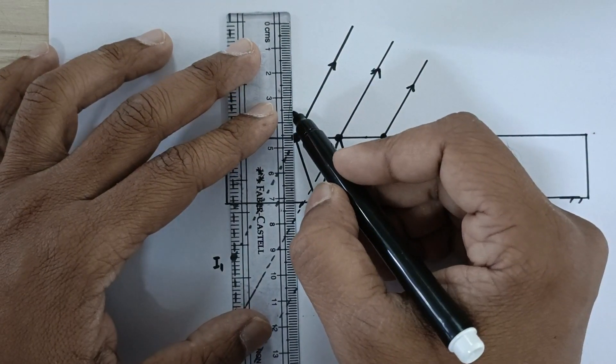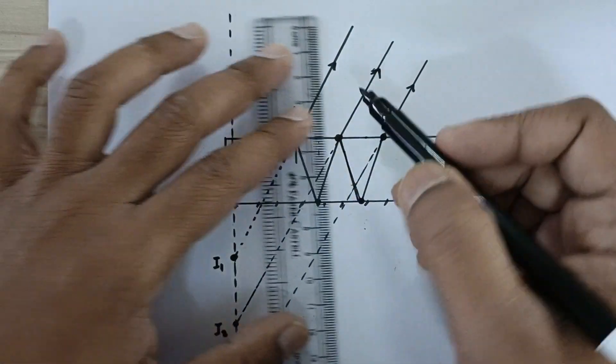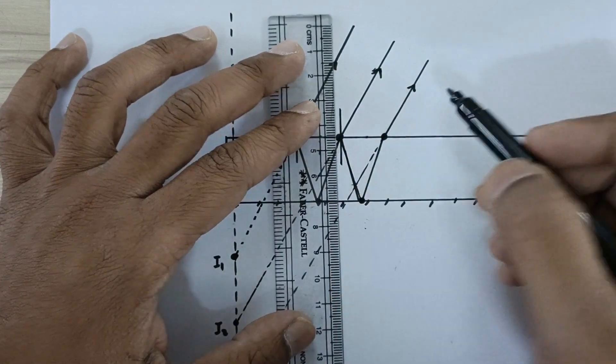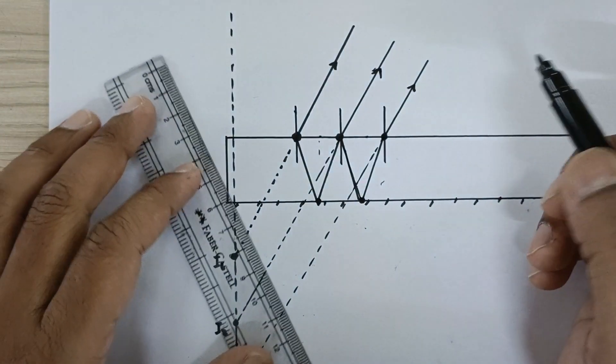Now you should be drawing a normal. Again a normal to the surface. Again a normal to the surface.